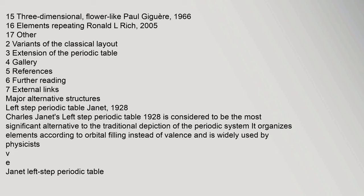Major alternative structures: Left Step Periodic Table by Janet, 1928. Charles Janet's Left Step Periodic Table of 1928 is considered to be the most significant alternative to the traditional depiction of the periodic system. It organizes elements according to orbital filling instead of valence, and is widely used by physicists.